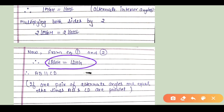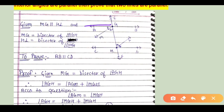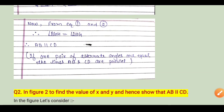From equations 1 and 2, angle AGH equals angle DHG. Angle AGH and angle DHG are alternate interior angles. Since alternate interior angles are equal, therefore AB is parallel to CD. The converse of the alternate interior angles theorem states: if alternate interior angles are equal, then the lines are parallel. So this proves our first question.